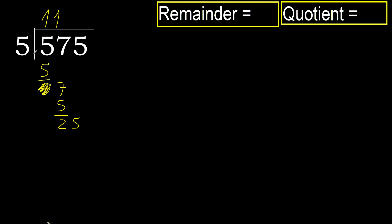Bring down 25. 5 multiplied by 5 is 25 — 25 is not greater. Subtract. Next.